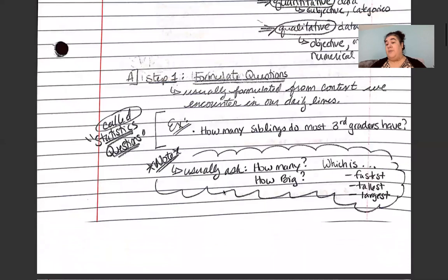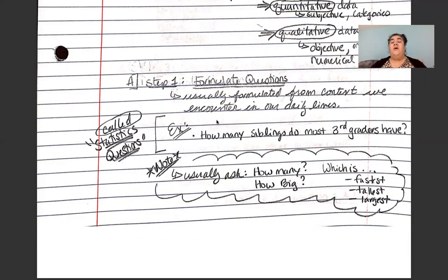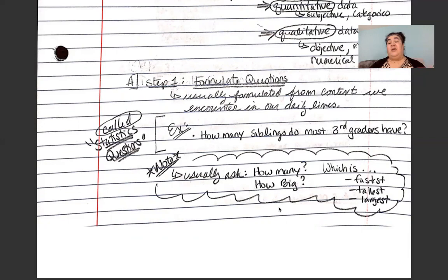Depending on which type of data you collect — quantitative or qualitative — that influences the appropriate statistical methods you use to analyze it and how you organize and display it. Step one in solving statistical problems is to formulate the question. These questions usually come from daily life contexts — for example, 'how many siblings do most third graders have?' is a question that can be answered statistically through a survey. Good statistics questions typically answer things like: how many, how big, which is the fastest, the tallest, or the largest.